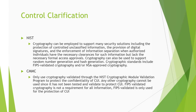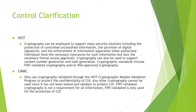There is a little bit of different clarification with each of the documents. Looking at NIST 800-171, cryptography can be employed to support many security solutions, including the protection of CUI, the provision of digital signatures, and the enforcement of information separation when authorized individuals have the necessary clearances for information but lack the necessary formal access approvals. Cryptography can also be used to support random number generation and hash generation. Cryptographic standards include FIPS-validated cryptography and NSA-approved cryptography, but we're really going to focus on that FIPS-validated part.